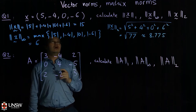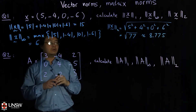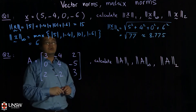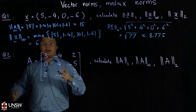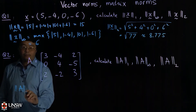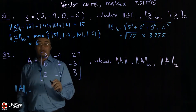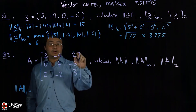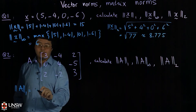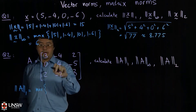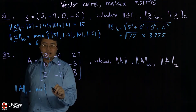Now for the matrix — how do you calculate the one norm, infinity norm, and two norm? For the one norm of the matrix A, the formula requires taking the column sums in absolute values and then taking the max. So the first column sum in absolute value is 3 + 0 + 2, which is 5.